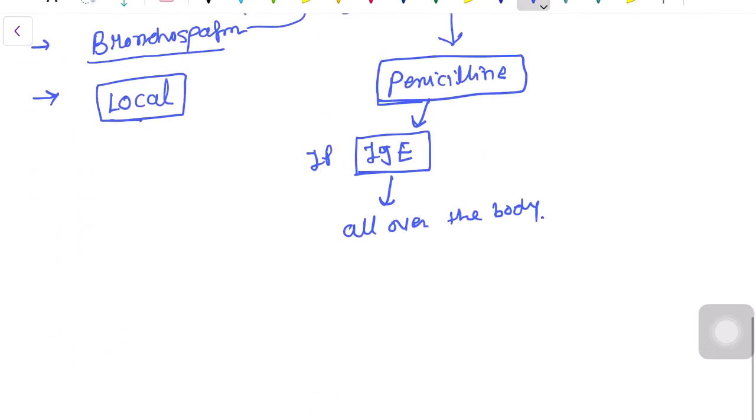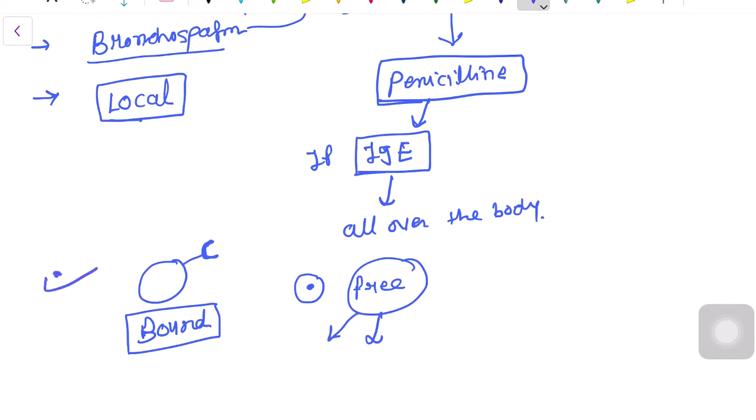One thing I want to emphasize: here the antibodies are fixed onto the cells, but the antigen is free. The antibody is bound and the antigen is free, so the antigen can move all over. That is type 1 hypersensitivity reaction.